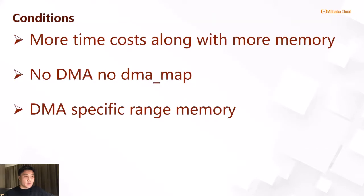Before we present the solution, we need to know some conditions. First, more memory means more time cost. Second, no DMA means no DMA map — if no devices need to do DMA, you don't need to do DMA map. But there is one important insight: DMA only touches a specific range of memory at a certain time. This gives us a chance to optimize. Maybe we don't need to pin map all the guest memory during VM creation.